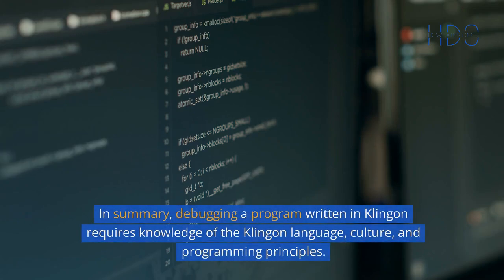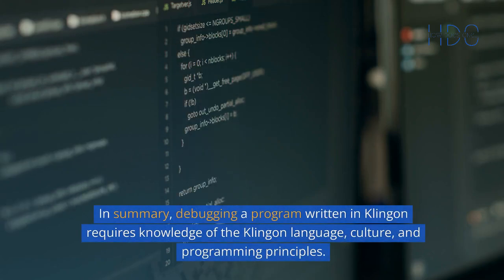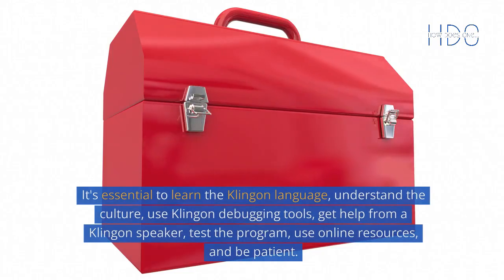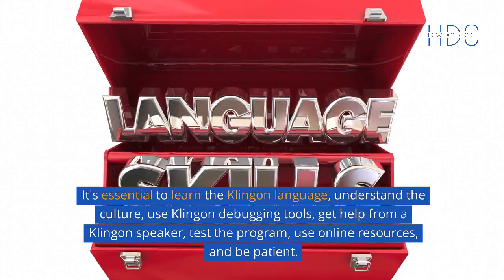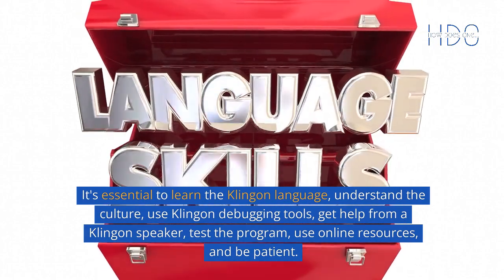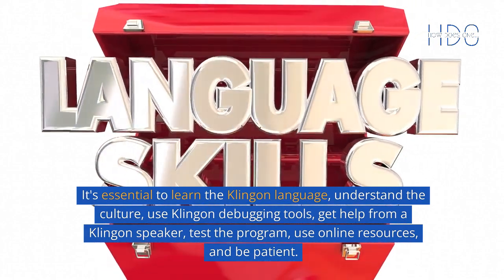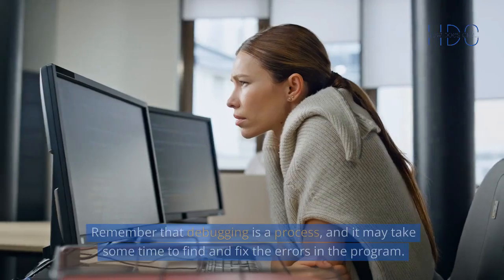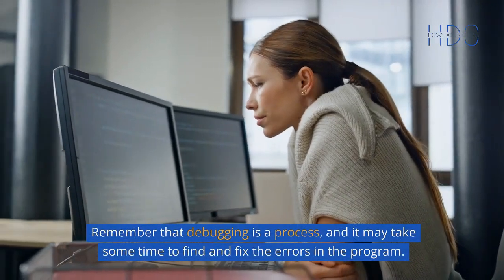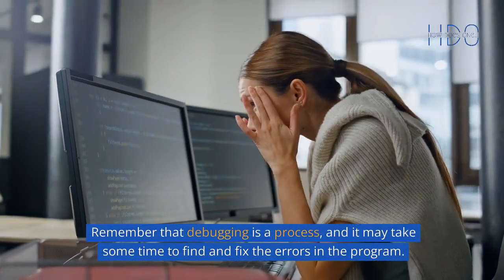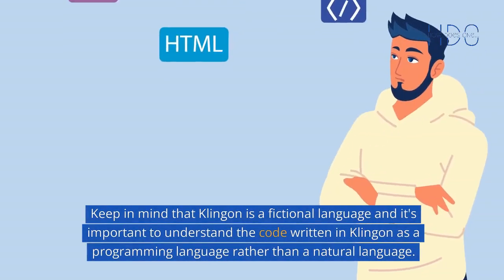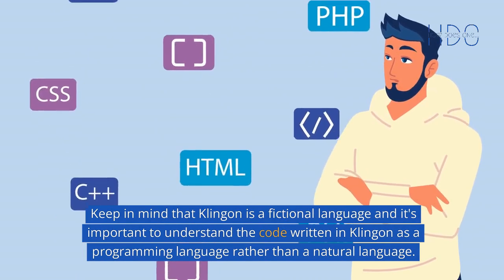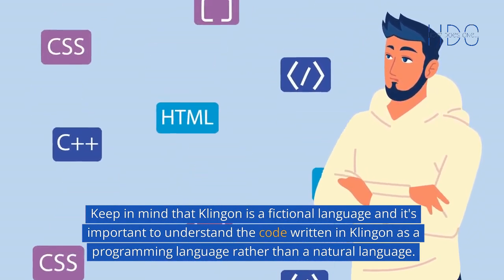In summary, debugging a program written in Klingon requires knowledge of the Klingon language, culture, and programming principles. It's essential to learn the Klingon language, understand the culture, use Klingon debugging tools, get help from a Klingon speaker, test the program, use online resources, and be patient. Remember that debugging is a process, and it may take some time to find and fix the errors in the program. Keep in mind that Klingon is a fictional language, and it's important to understand the code written in Klingon as a programming language rather than a natural language.